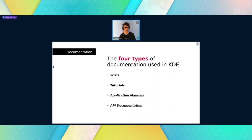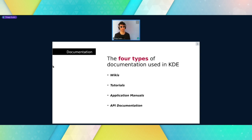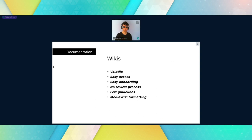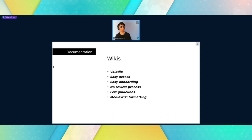More on topic about KDE: we have four main types of documentation. There are more types, but the most important ones — listed in order of difficulty — are wikis, tutorials, application manuals, and API documentation.